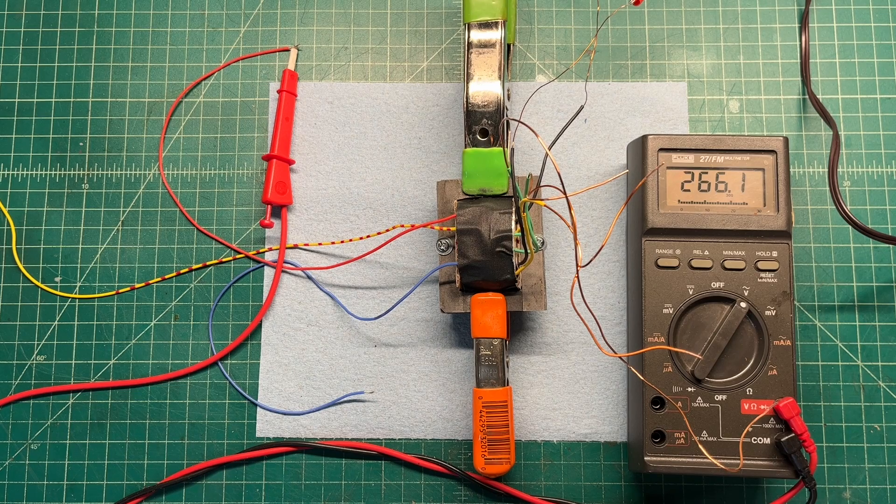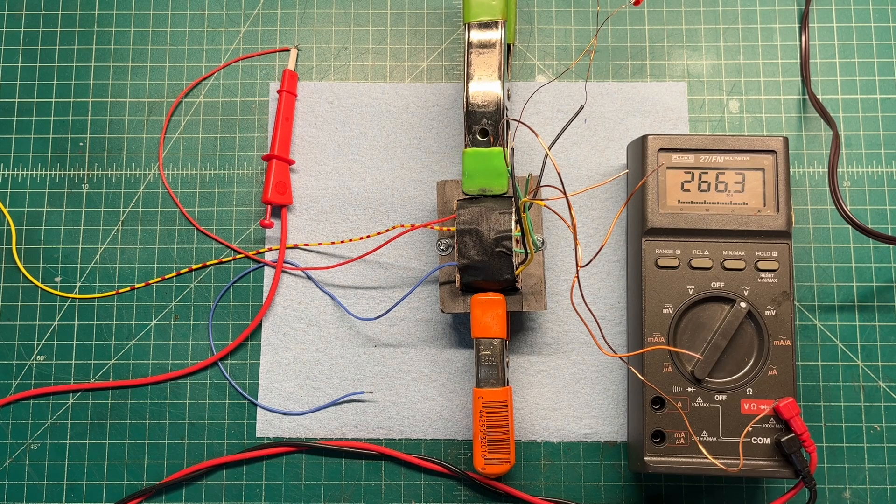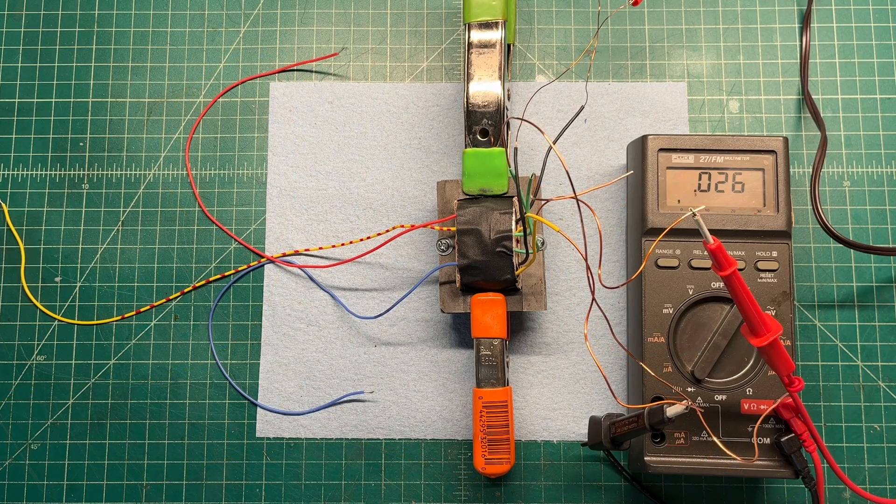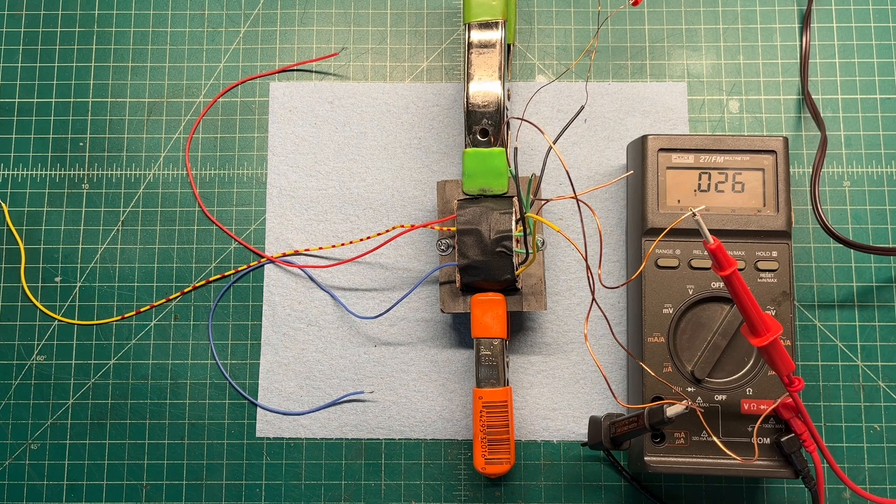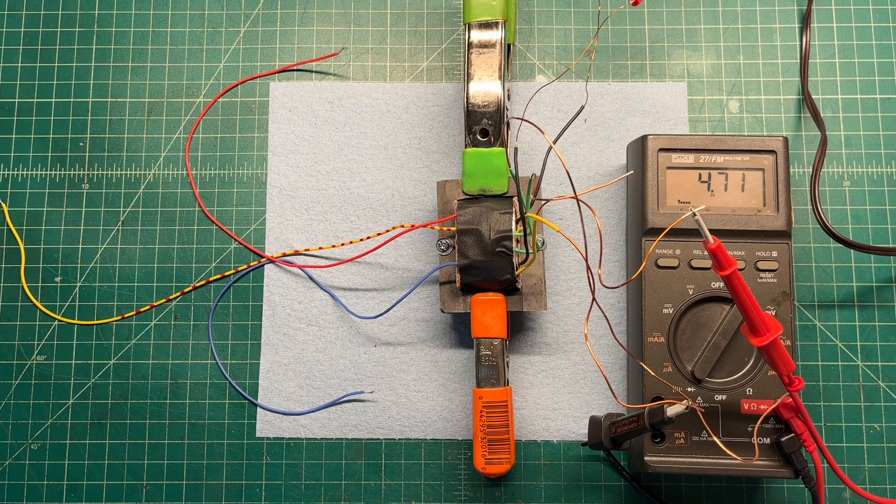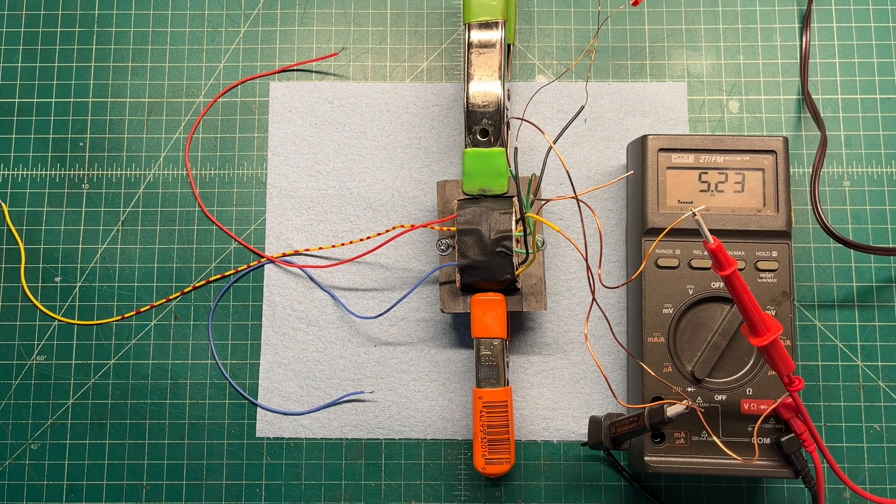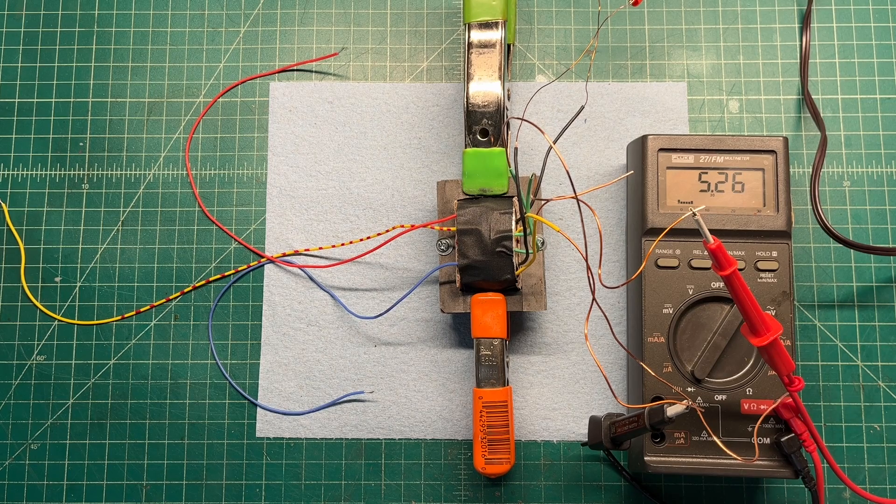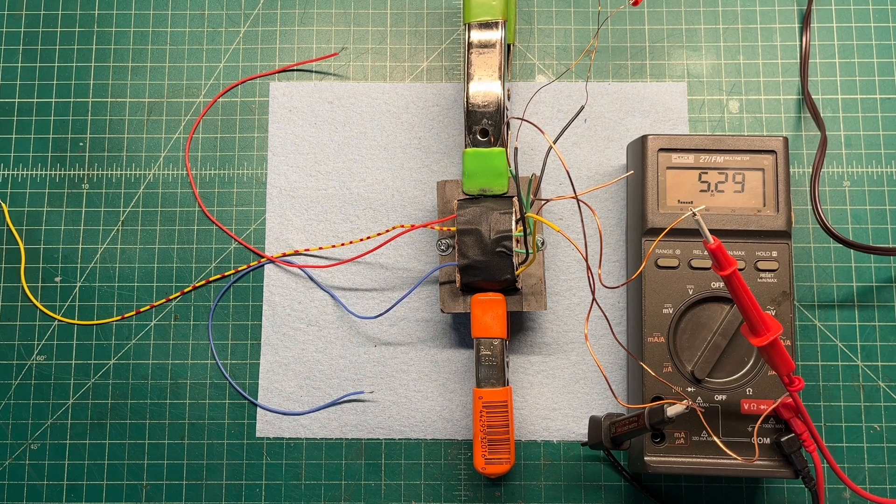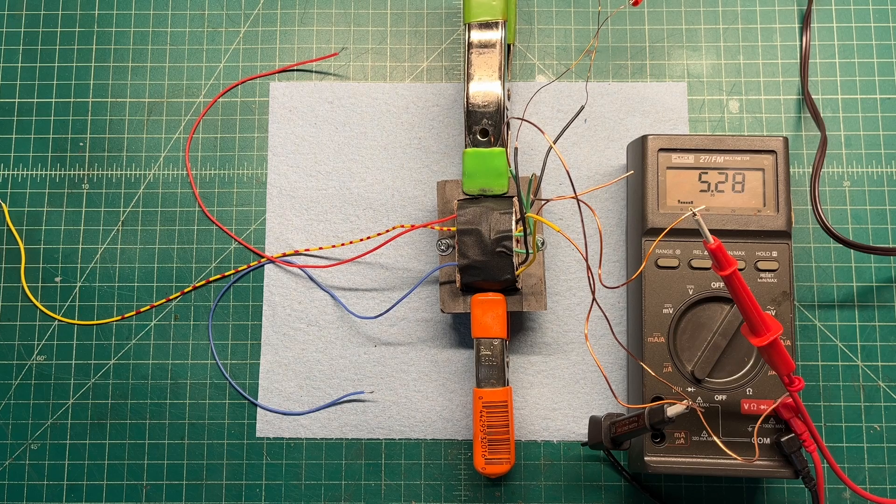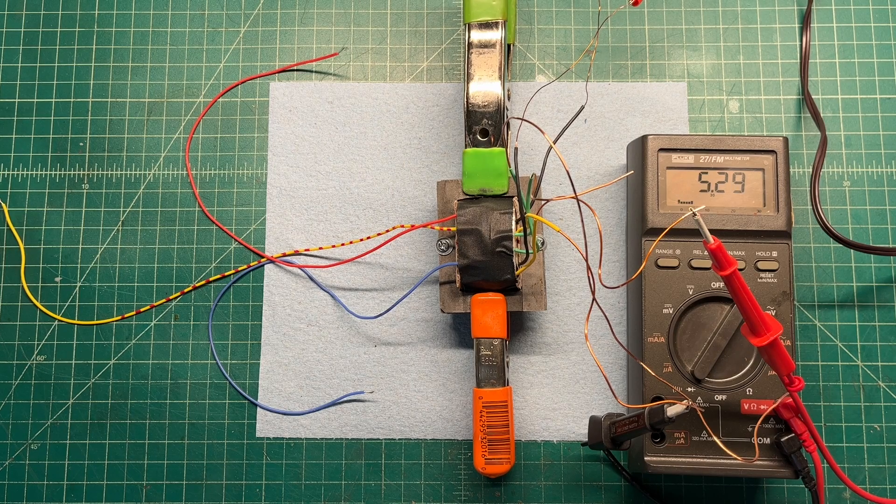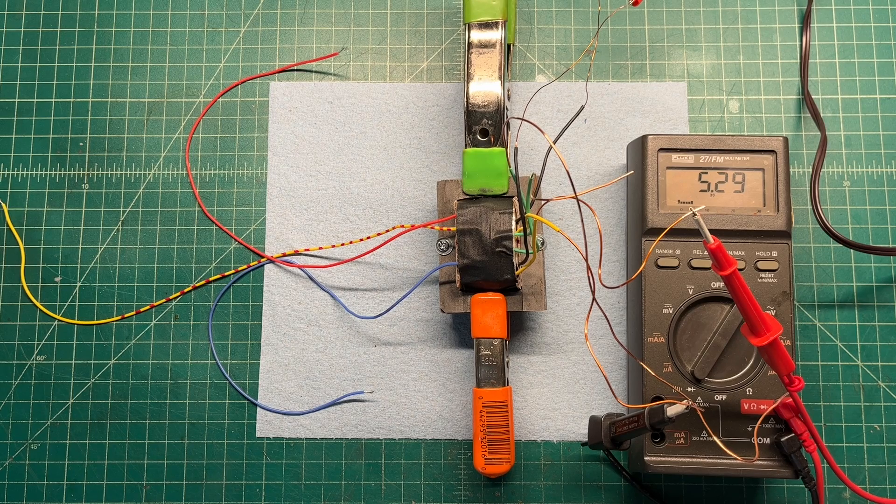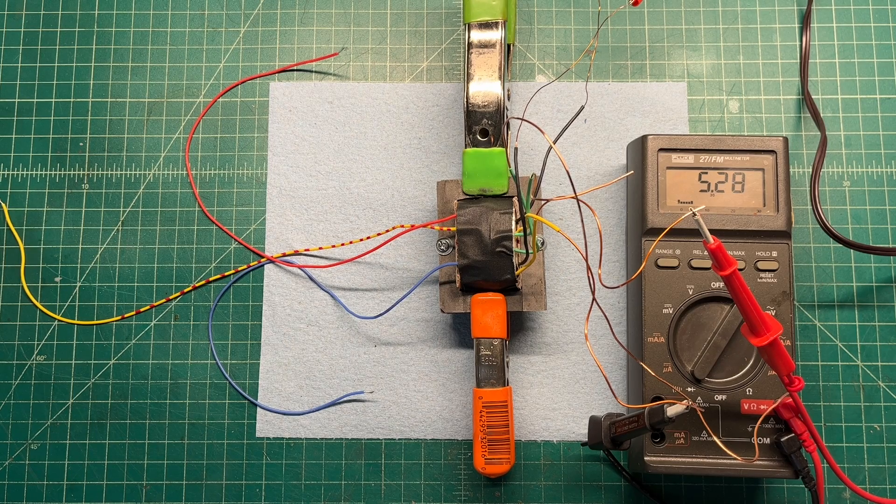Let's check the filament windings, the 5 volt and the 6.3. We'll start with the 5 volt winding. Sitting at about 120.4 volts AC and 5.29 or roughly 5.3 volts unloaded.